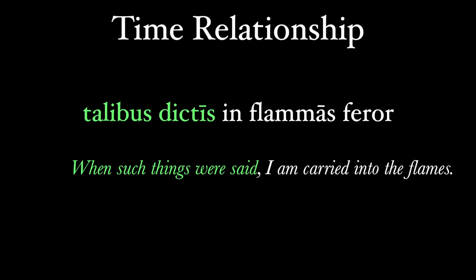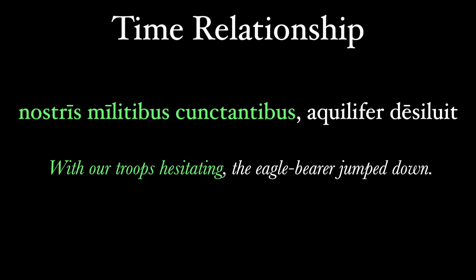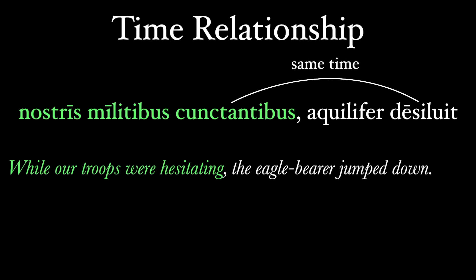The last two examples have used perfect participles, but you can use present participles too. 'Nostris militibus cunctantibus, aquilifer desiluit' — 'With our troops hesitating, the eagle bearer jumped down.' Better yet: 'as our troops were hesitating' or 'while our troops were hesitating.' The present tense of the participle is important, because present participles show a same-time action with respect to the rest of the sentence. The hesitating is happening and still going on when the aquilifer jumped.